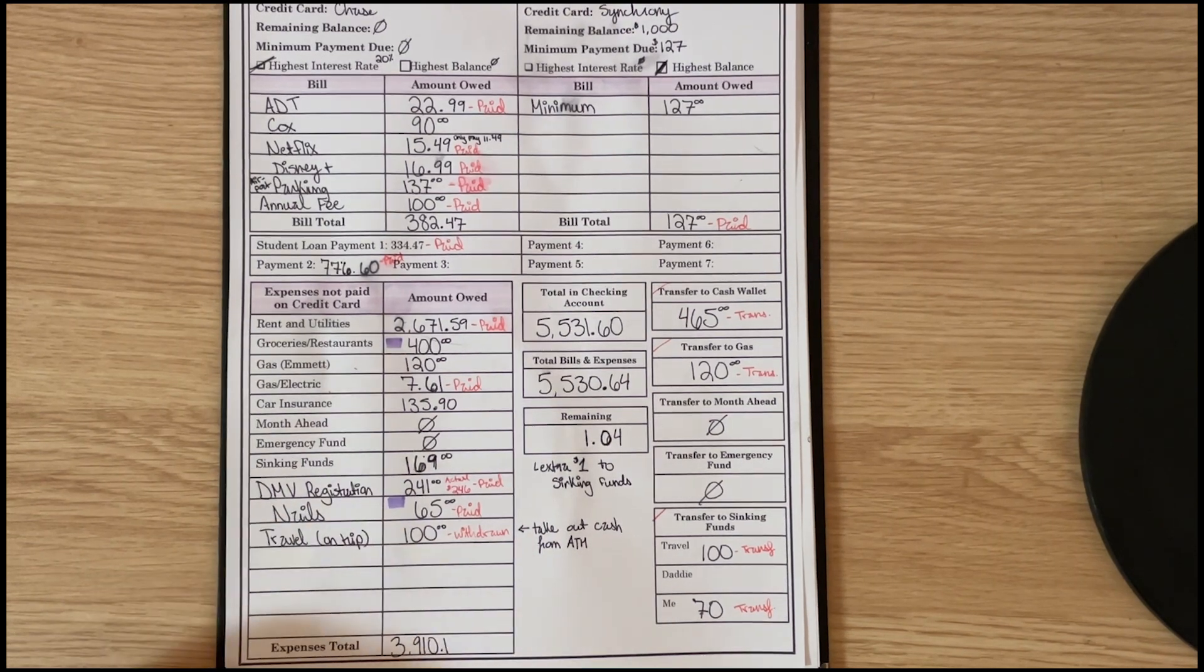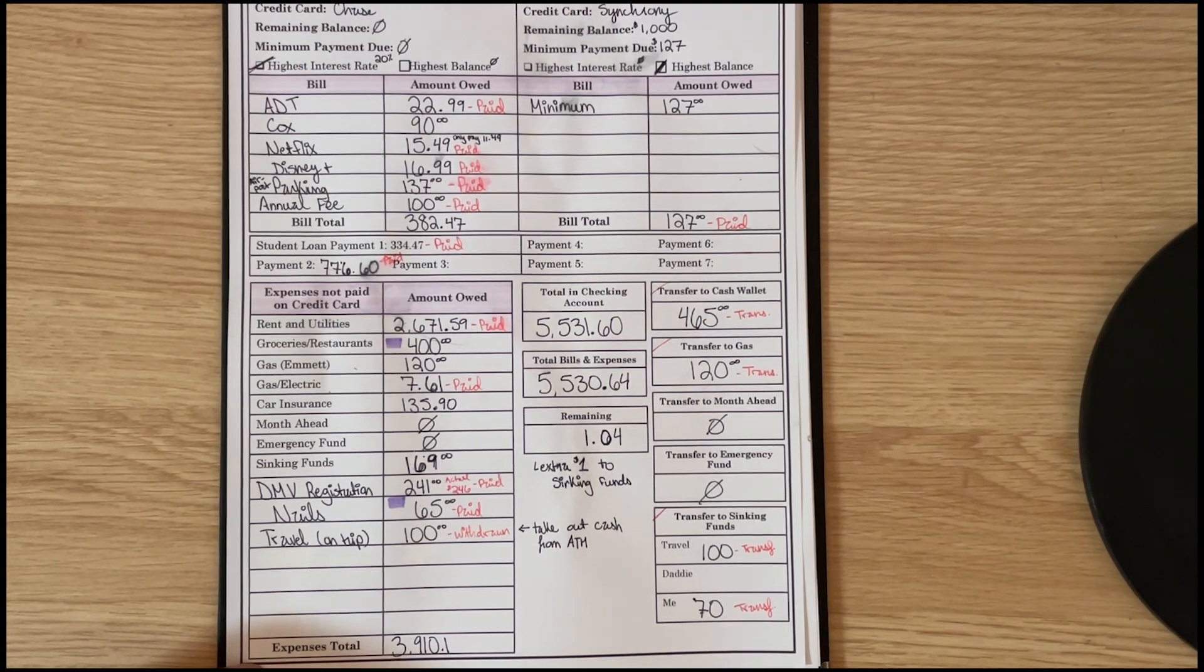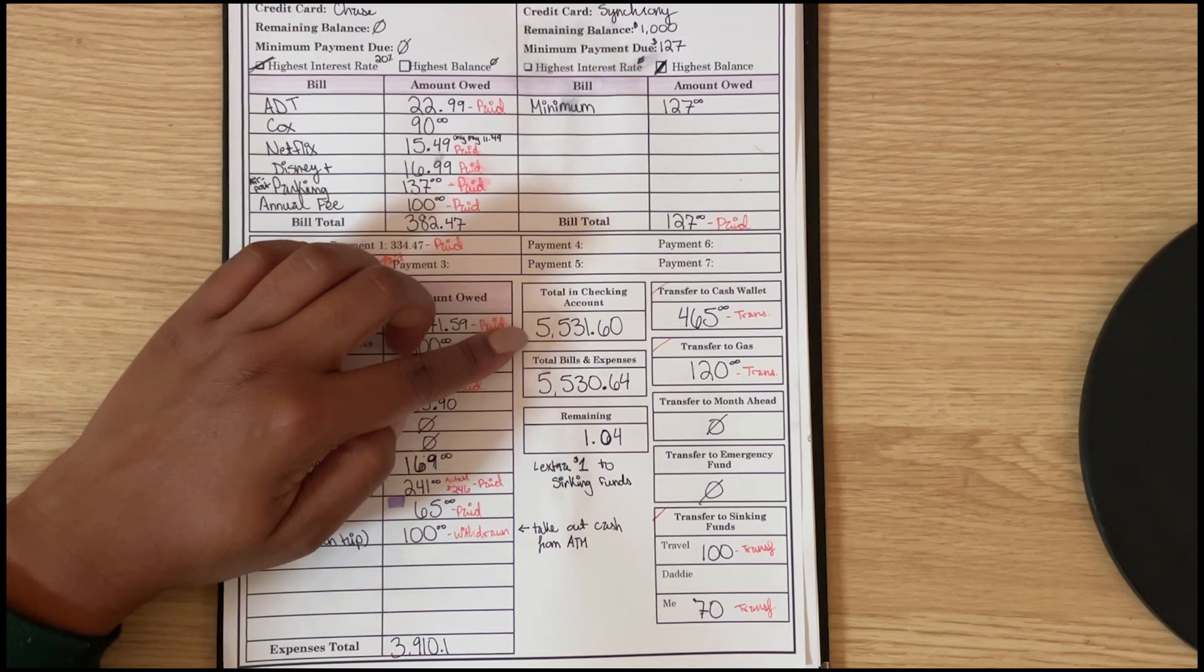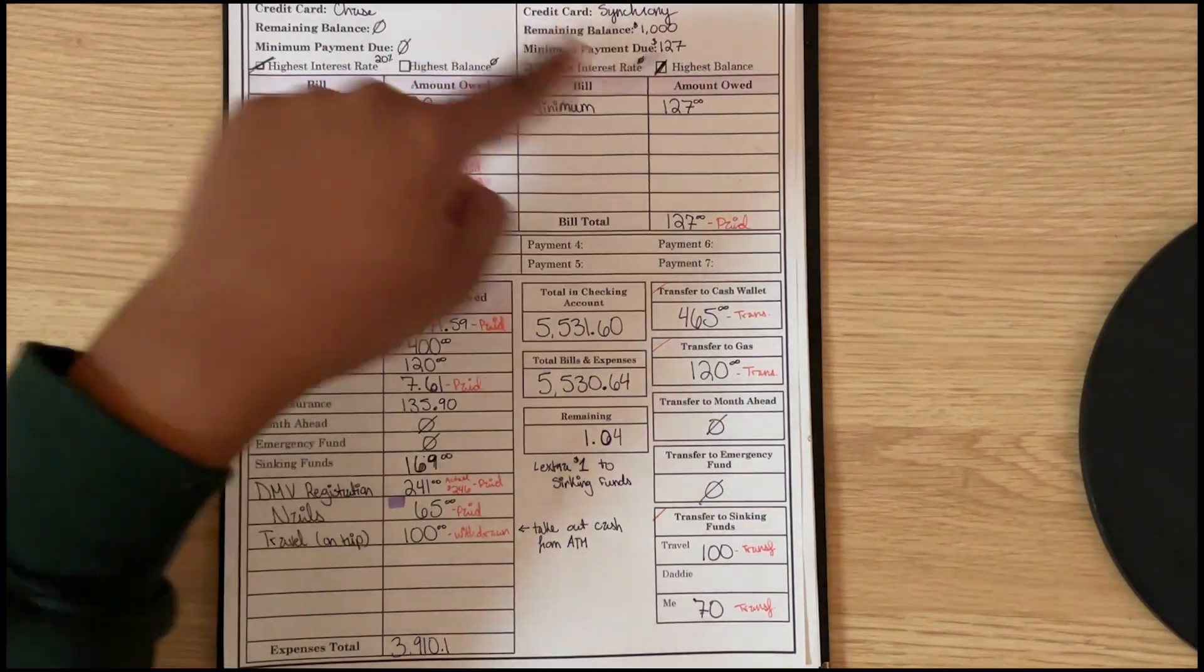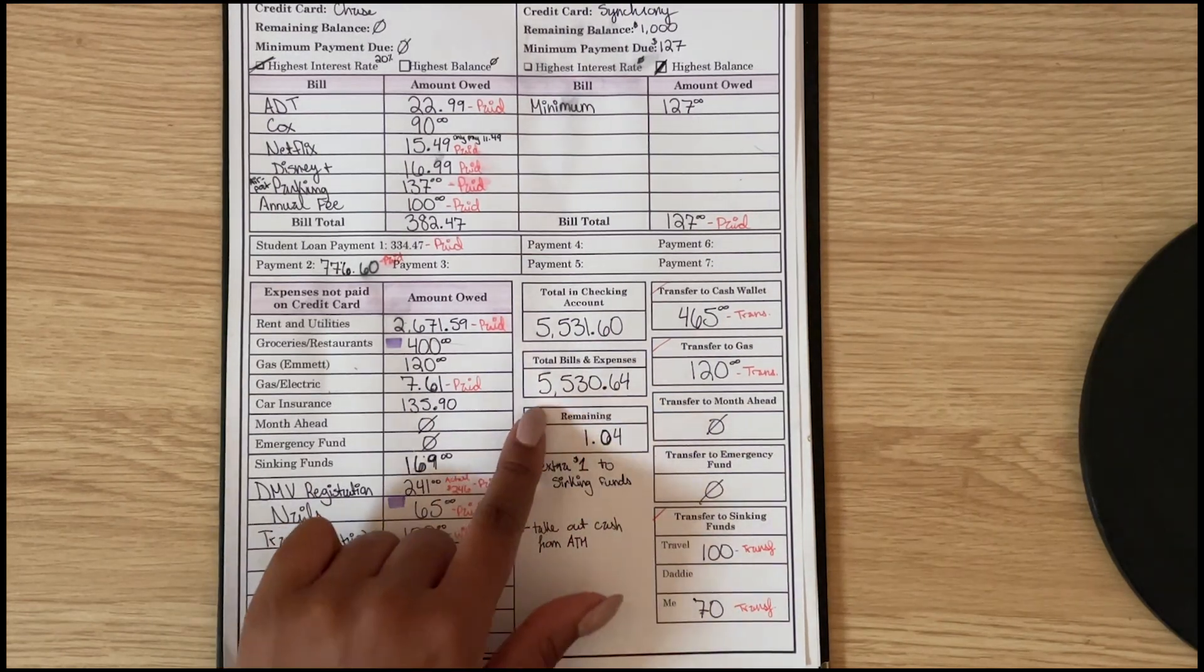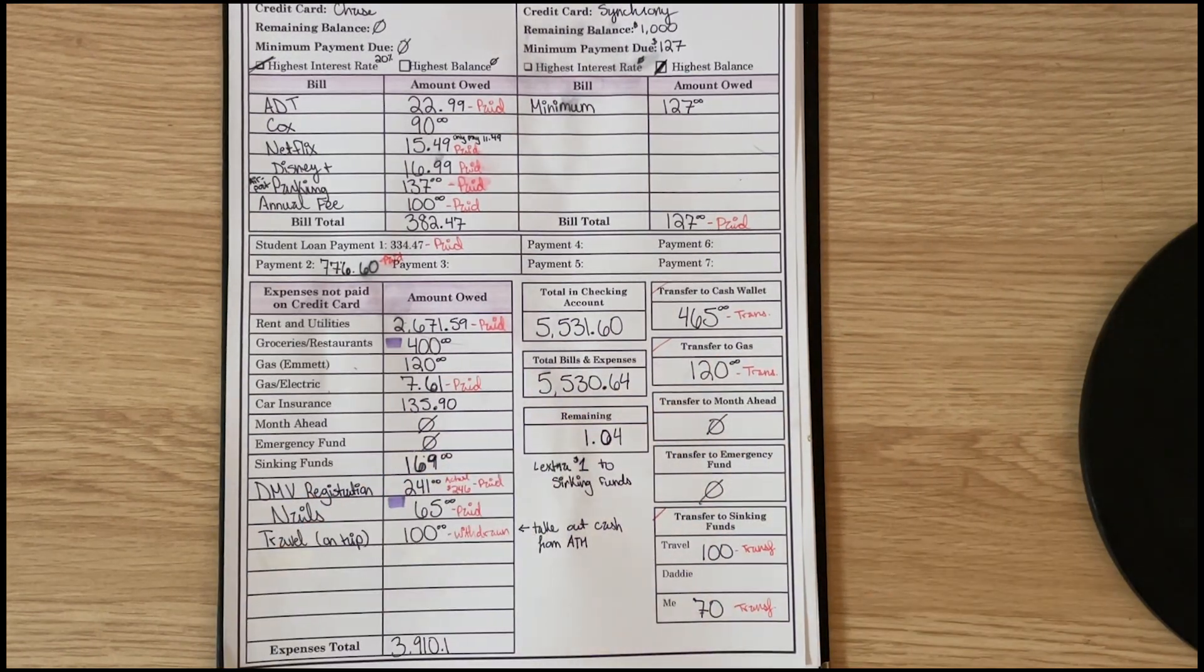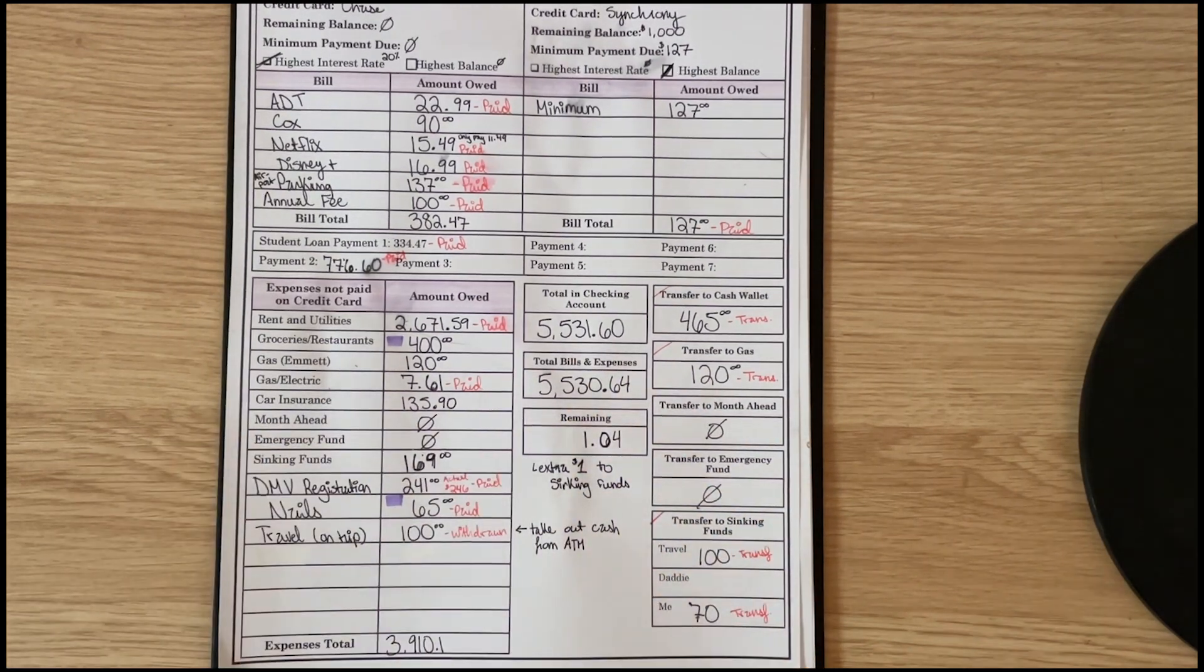That leaves my entire expenses total at $3,910.10. In my checking account we had $5,531.60. My expenses all totaled up came out to $5,530.64. Remainder: $1, so I just added that $1 to sinking funds to make it an even $170.